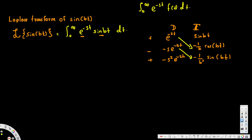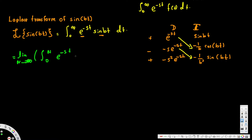The integration is performed via cross multiplication in this tabular method. Now, since we have an improper integral, we take the limit as n approaches infinity. Instead of infinity, we replace the upper bound with n, so the integral goes from 0 to n of e to the negative st times sin(bt) dt.